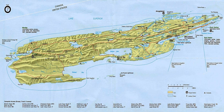The following is a list of islands in Isle Royale National Park. Located in Lake Superior, Isle Royale is the second-largest island in the Great Lakes system, after only Manitoulin Island in Lake Huron.